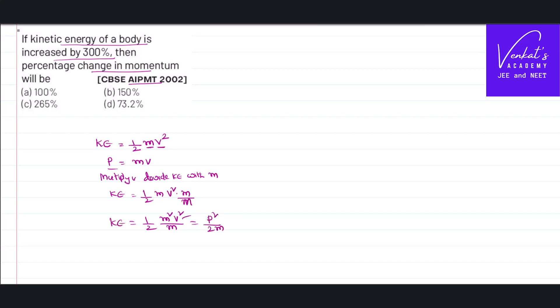Thus the relation between kinetic energy and the momentum equals K equal to P square by 2m. Here, what we can say is mass of the body is constant. It is not variable at least in our problem.